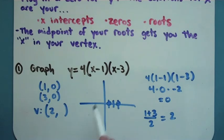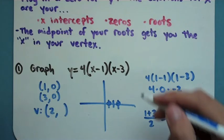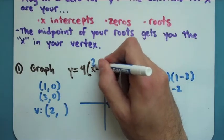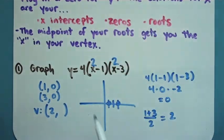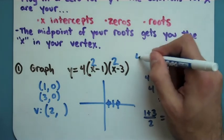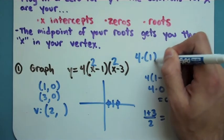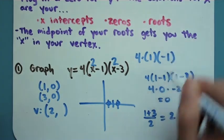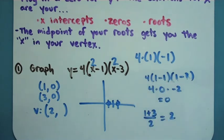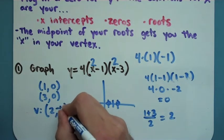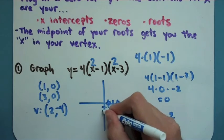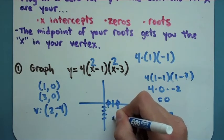Now all I have to do is plug in a 2 for x, and see what I get out, and that'll be my y. So I'm going to put a 2 in right here, and a 2 in right here, so I can see what I get. I'll get 4 times that first parenthesis is a 1 times a negative 1. It appears that I will get out a negative 4. So my vertex is at 2 comma negative 4.